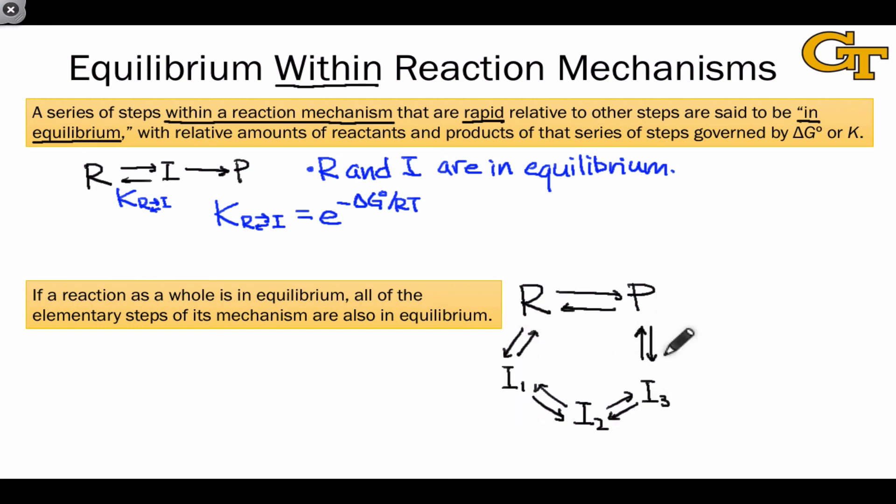All of the steps along the reaction mechanism pathway are in equilibrium with respect to each other if the reaction as a whole is in equilibrium as we've shown here. This means that the entire distribution of molecules R, I1, I2, I3, and P can all be thought of using the tools of chemical equilibrium, namely the equilibrium constants for each step, capital K1, K2, K3, and K4,